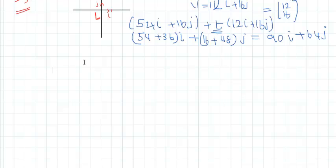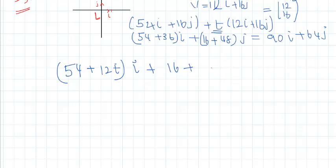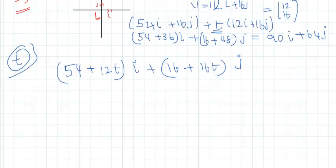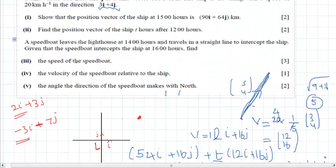The second part asks us to find the position vector of the ship in terms of t, where t represents hours after the starting time. This is straightforward — we write the general equation: position equals (54 plus 12t)i plus (16 plus 16t)j. In the previous part we substituted t equals 3; now we keep it in general form. If t is 5 hours, just substitute 5 to get the ship's position at that time.